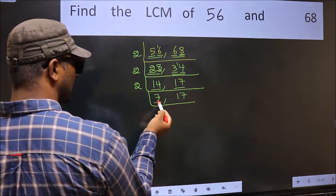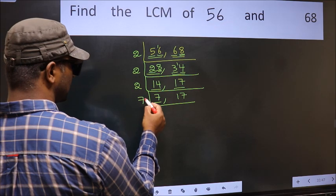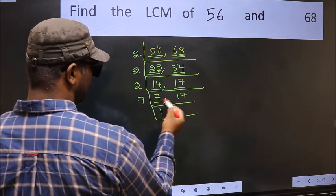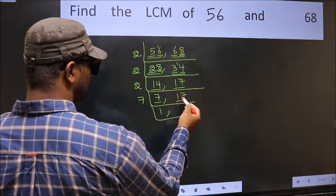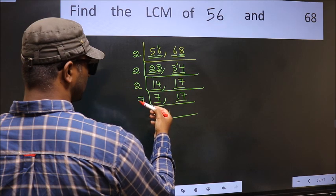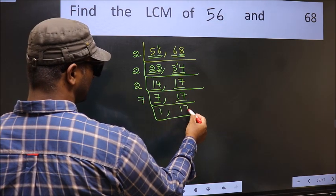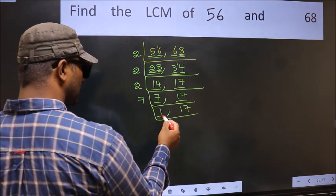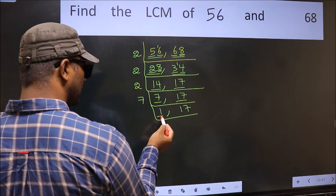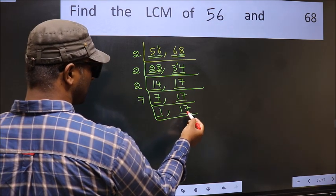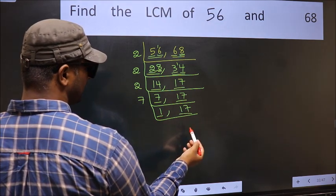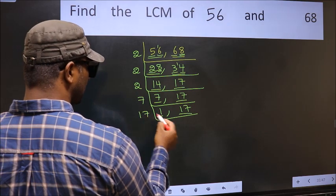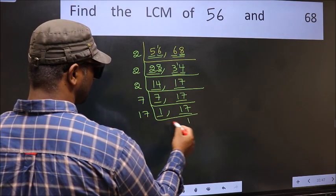Now we have 7, which is a prime number, so 7×1=7. The other number, 17, is also a prime number, so 17×1=17.